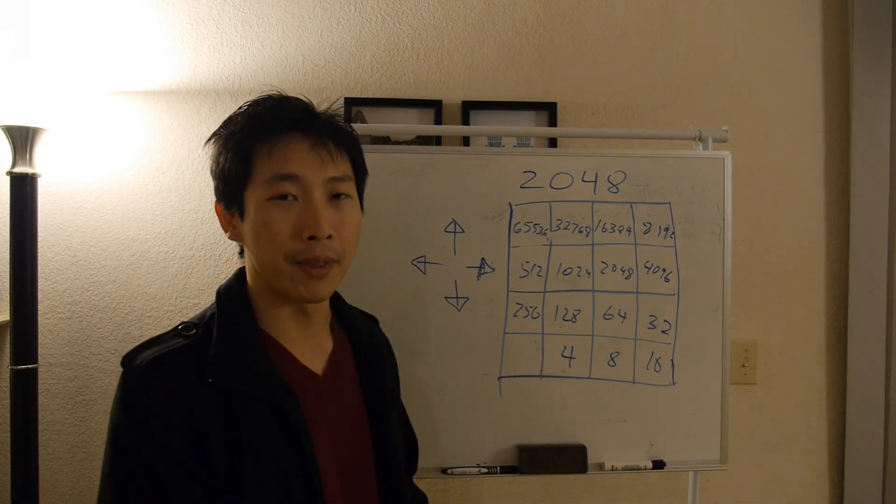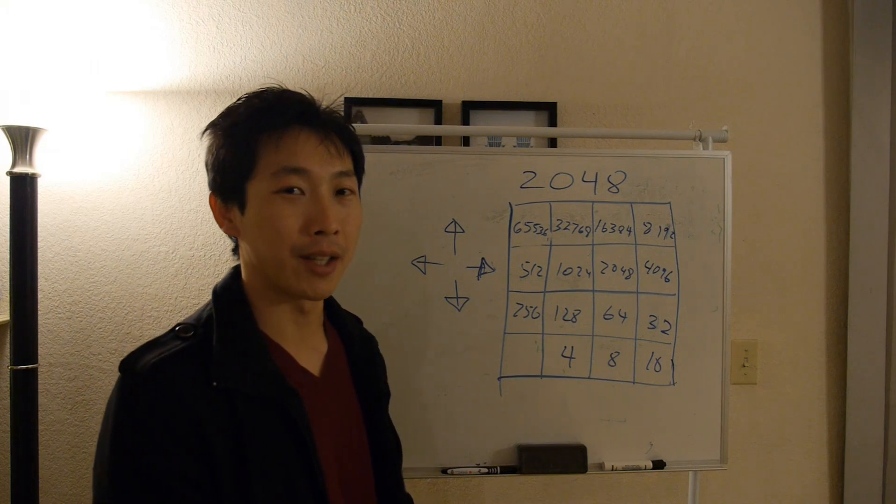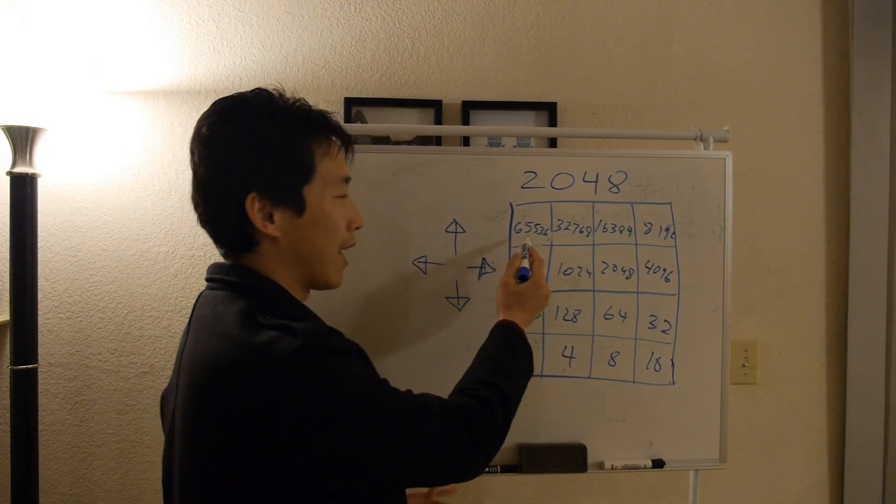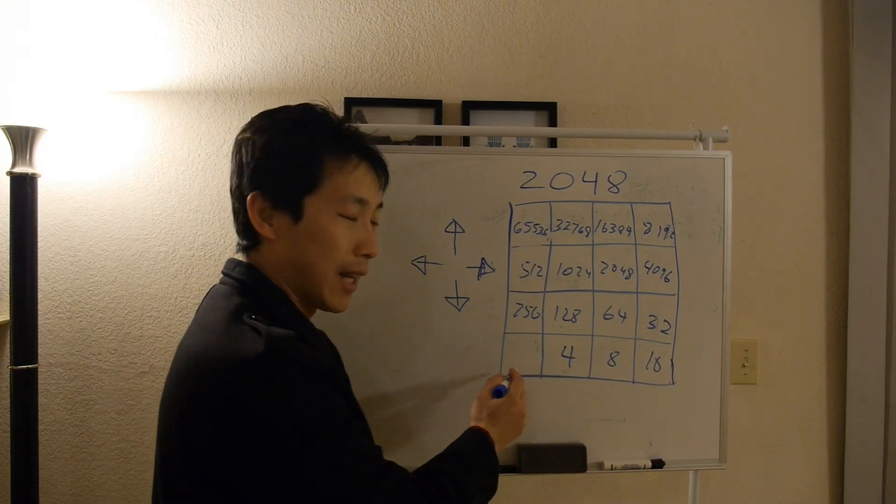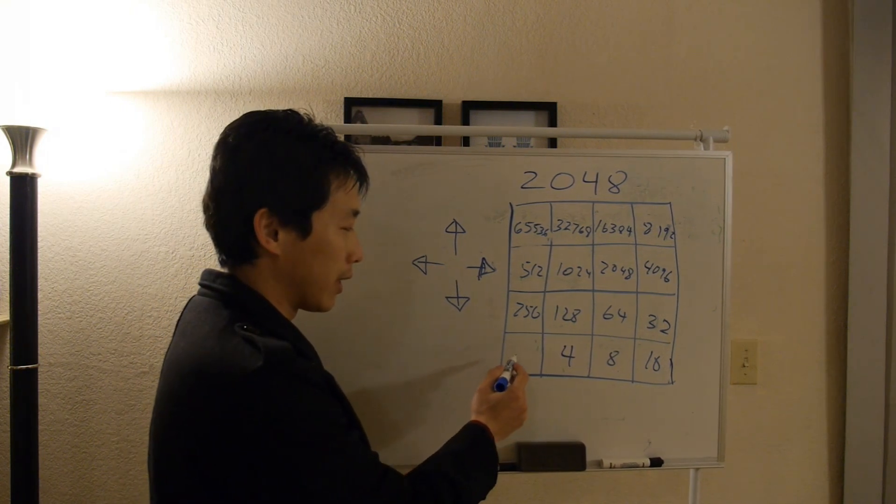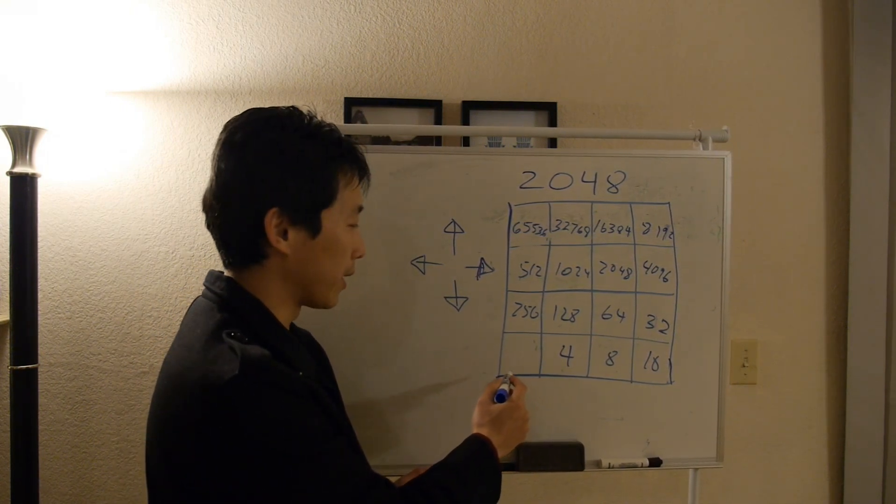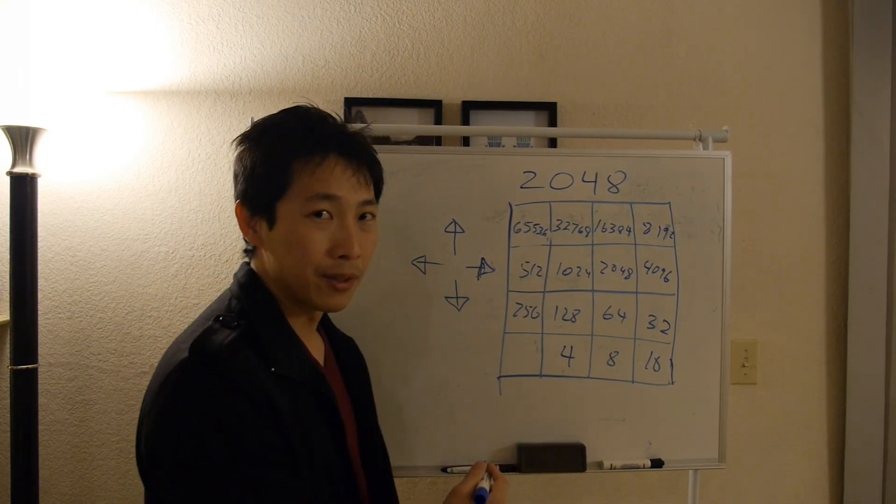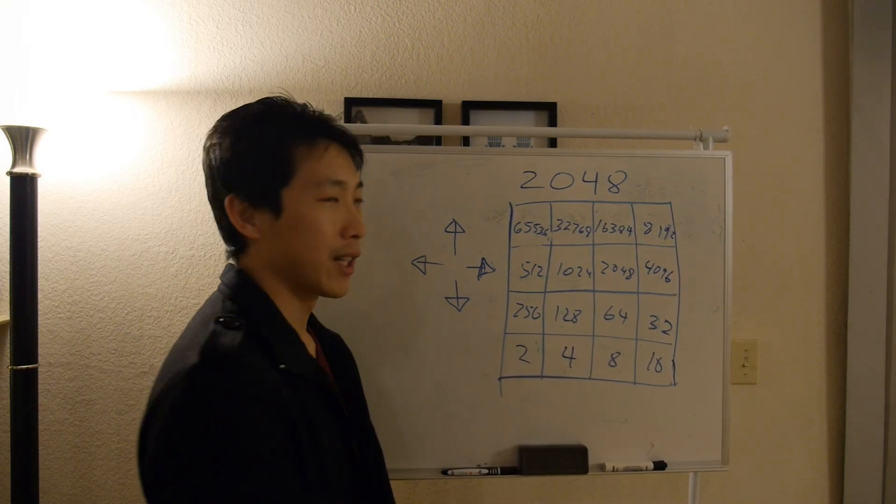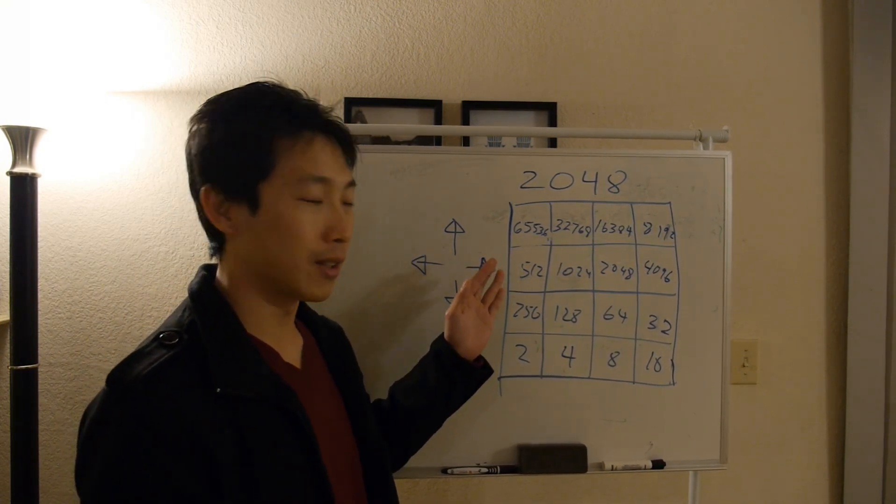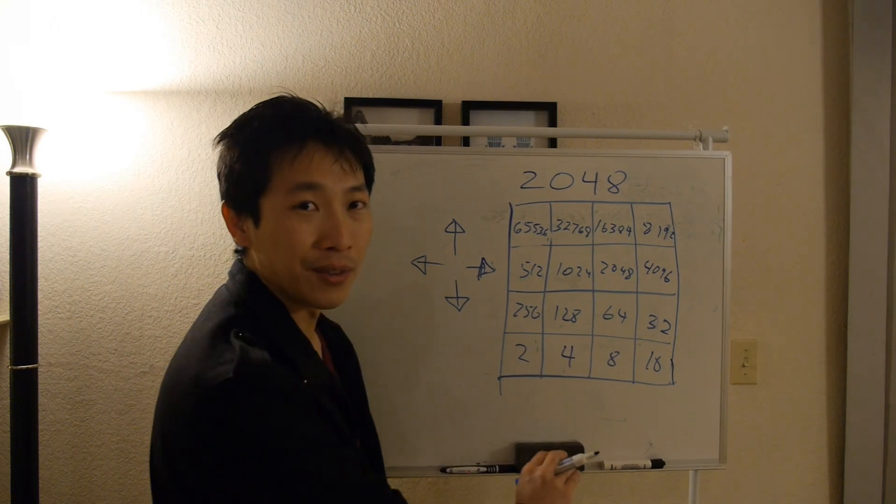So here I've drawn a hypothetical maximum tile that you can get, which is 65,000. In the last position, either a 2 or a 4 would appear. So if you happen to get a 2, you're stuck. You only get a 65,000 tile.